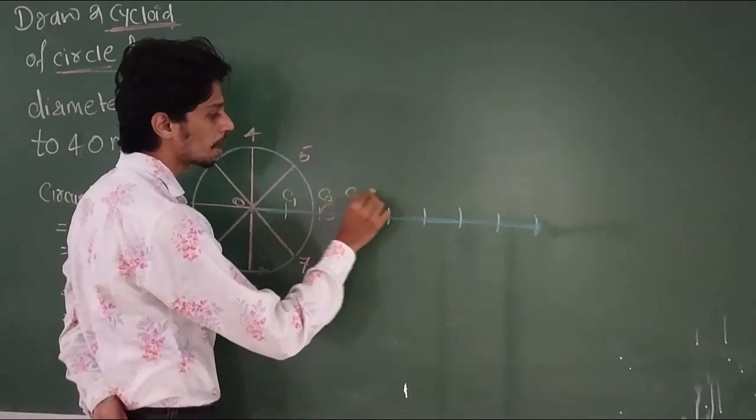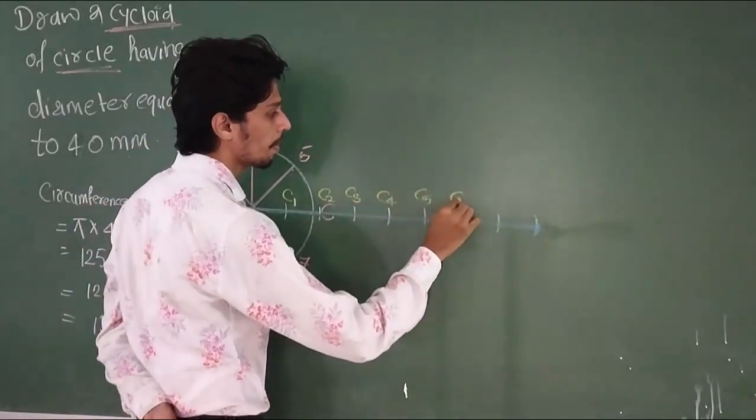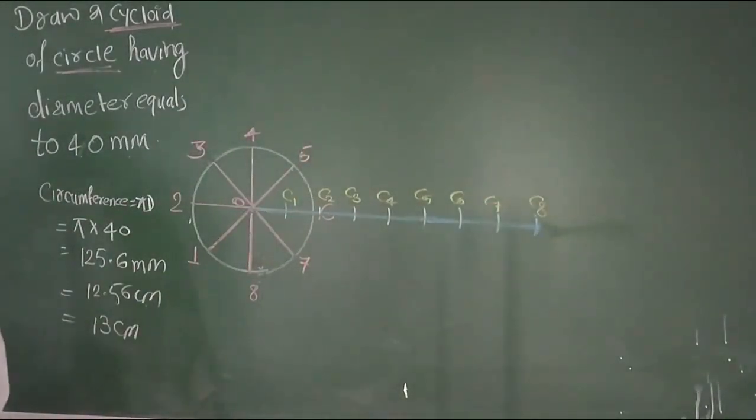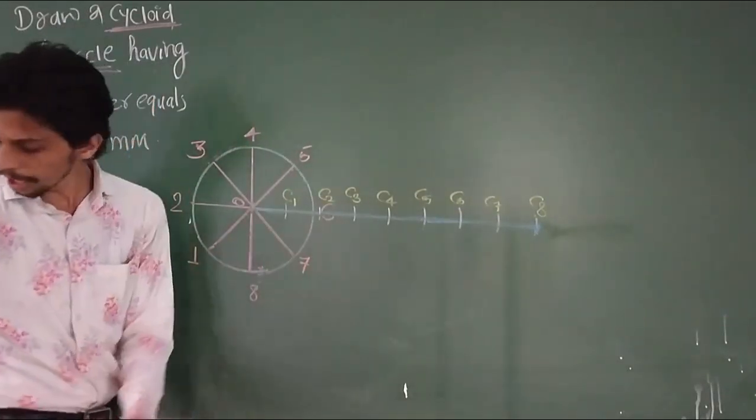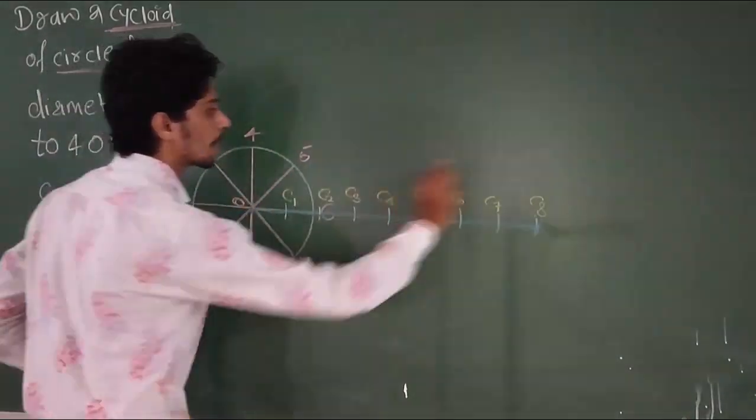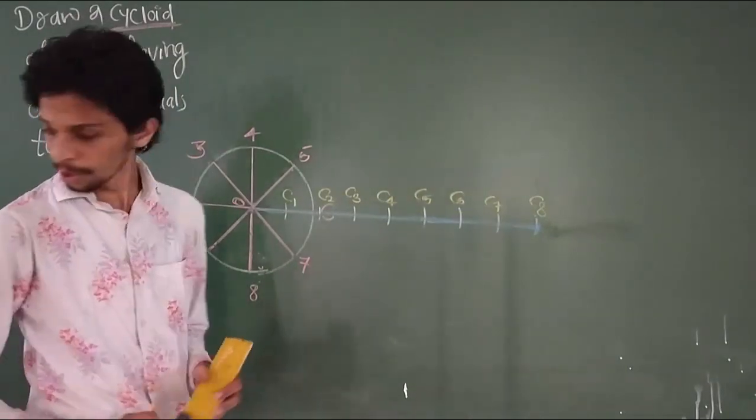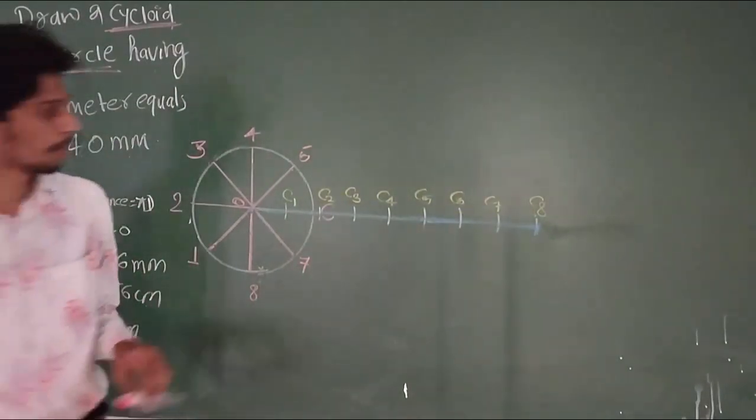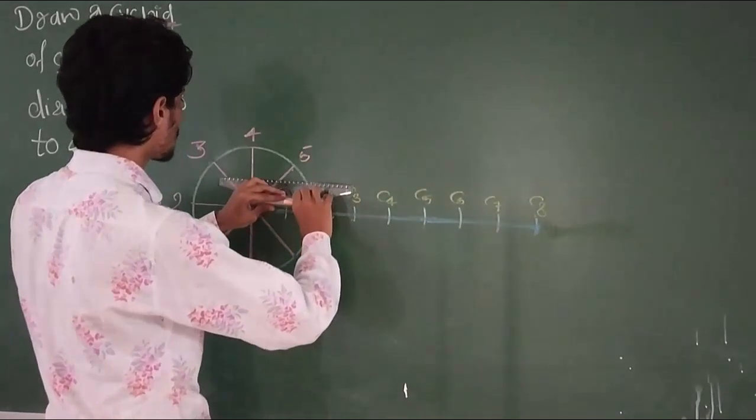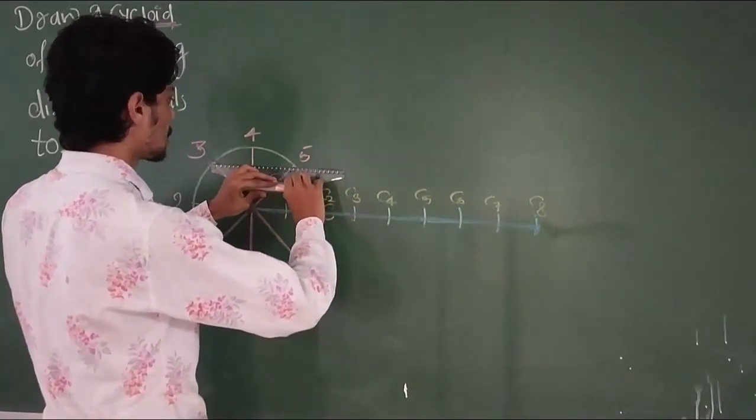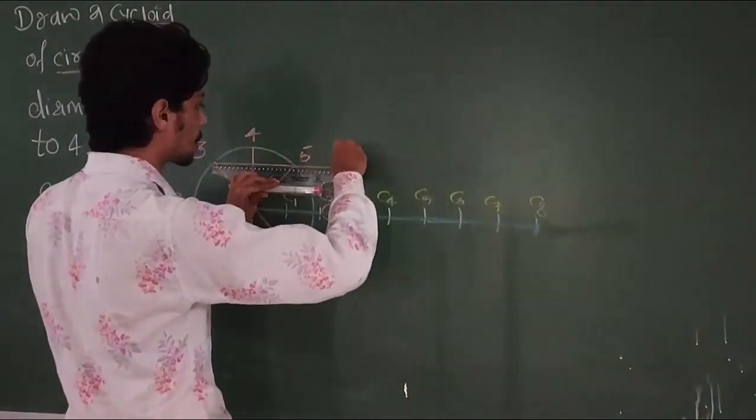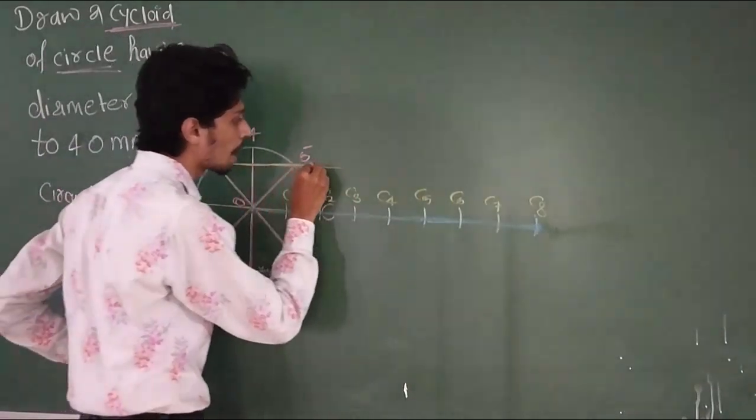Now I will give you numbering: C1, C2, C3, C4, C5, C6, C7, C8. So, you have marked these points. Next step, you have to draw from these points, horizontal lines upward. Draw vertical lines from each marked point.